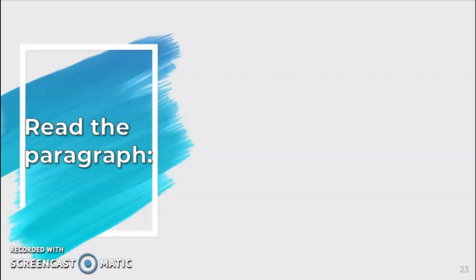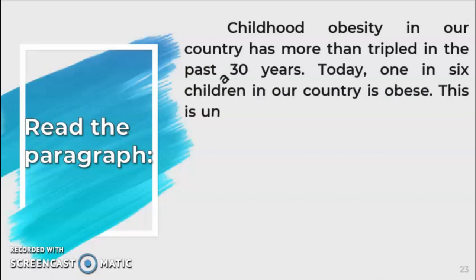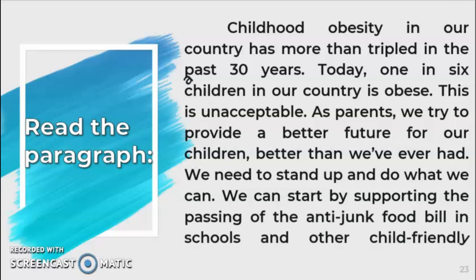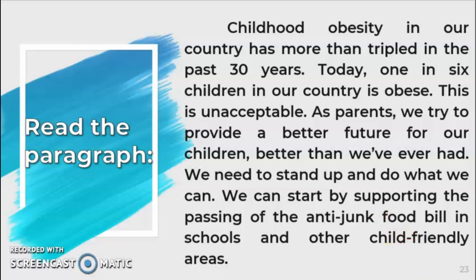Are there any questions with regards to the different types of claims? Now let's read the following paragraph silently. In the given paragraph, information such as the tripling of the amount of obesity is used in an explicit manner. The author uses this claim of fact to base his ideas on reliable authority — in this instance, statistics. The author also uses a standard of providing a better life to children as a claim of value, before leveraging a change in policy as stated in the sentence supporting the passing of the anti-junk food bill in schools and other child-friendly areas. These pieces of information explicitly tell us that obesity is a problem, and the passage is implicitly informing us that we can contribute to solving this issue. Are there any questions with regards to explicit and implicit information in a text and the different types of claims?